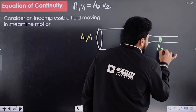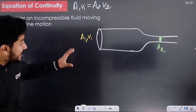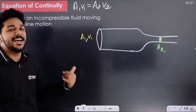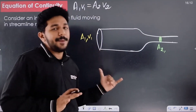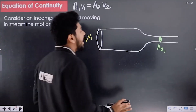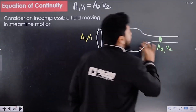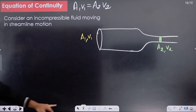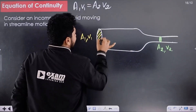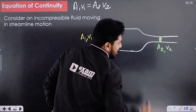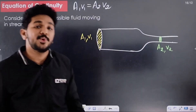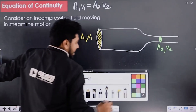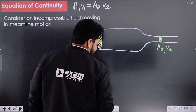Area of cross-section A2. The speed at area of cross-section is not the same. V1 doesn't equal V2. The area A1 has velocity V1, and area A2 has velocity V2. Let's say we consider a delta-T time interval.